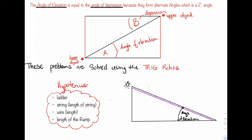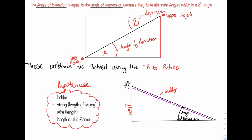So once we are in a situation that asks us about the length of the ladder, here's an example. This is what a ladder would look like when it's bracing a wall. We see that the ladder is representing the hypotenuse, the wall is representing the opposite side, and here we have the angle of elevation in that lower corner. So ladder, string, wire, and length of ramp are all related to the hypotenuse.